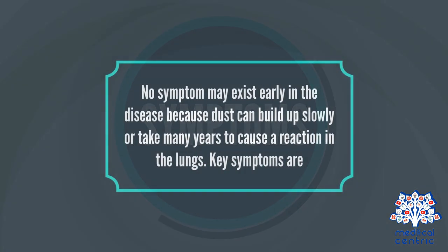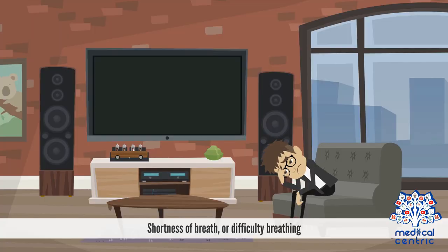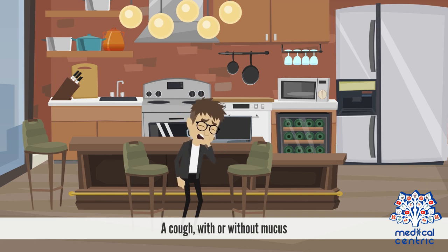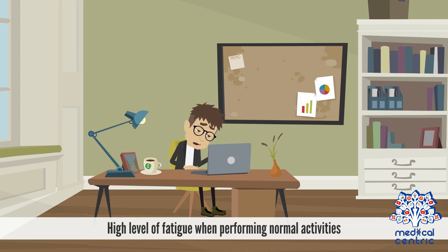No symptom may exist early in the disease because dust can build up slowly or take many years to cause a reaction in the lungs. Key symptoms are shortness of breath or difficulty breathing, tightness in the chest, and a cough with or without mucus. Oxygen may be prevented from easily reaching the blood during breathing if the condition involves a larger area or causes severe scarring, resulting in hypoxemia — low blood oxygen levels. High levels of fatigue when performing normal activities may also occur.